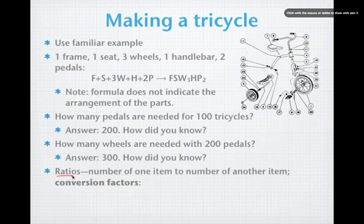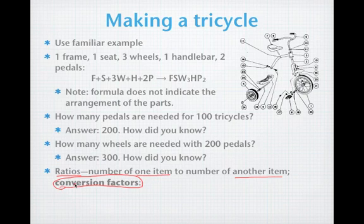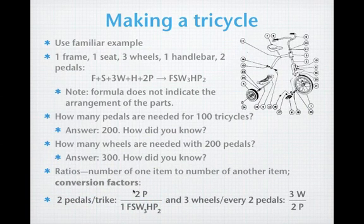These ratios are going to be the numbers that relate one item to another. So, we're going to take one item, and we're going to relate it to another through these ratios, and these ratios are going to become our familiar conversion factors from dimensional analysis. For instance, in the previous examples, if we looked at the number of pedals per trike, we would say that we need two pedals for every trike. Or, if we wanted to relate the wheels to the pedals, we would say that we need three wheels for every two pedals that go into the trike. So, here we have two components being related to each other.